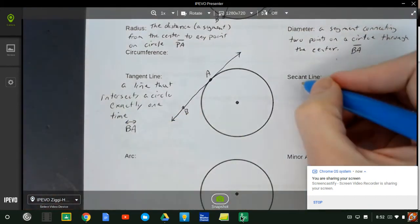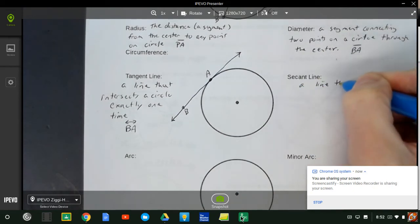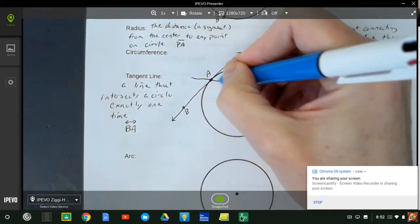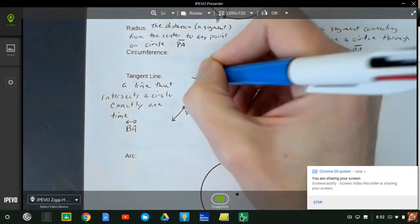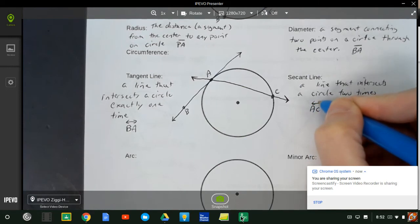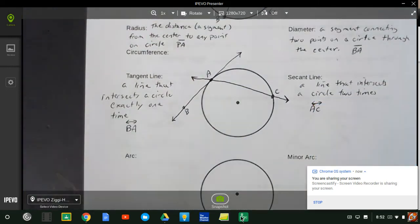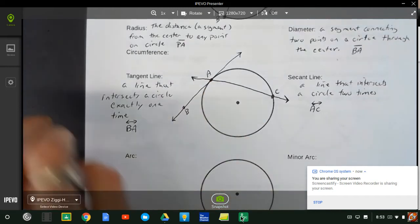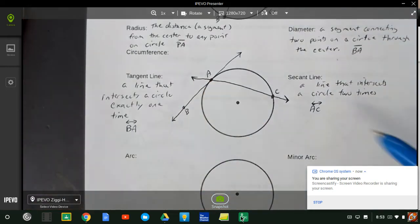We talked about secant lines. They're a line that intersects a circle two times. So if I connect a line through here, it's not a very straight line. I should use my straight edge, I guess. There is line AC is a secant. But do notice something about my secant line. It contains a chord, because it contains segment AC. So segment AC is a chord, line AC is a secant line. So we've got to be very careful about what notation we're using when we're talking about either a chord or a secant.